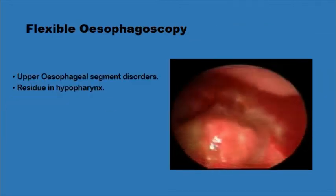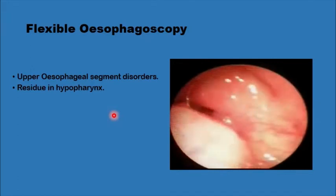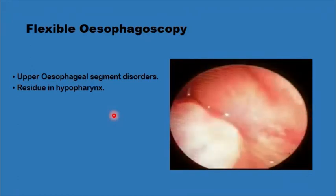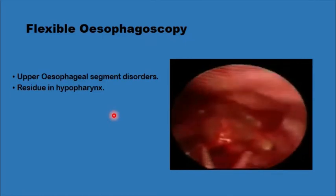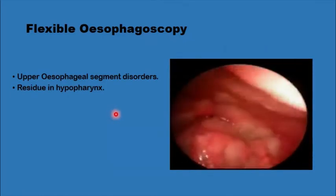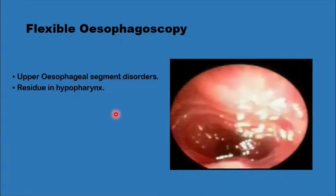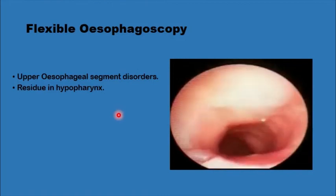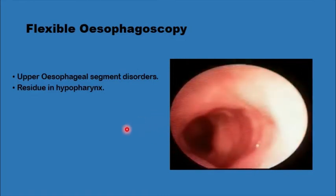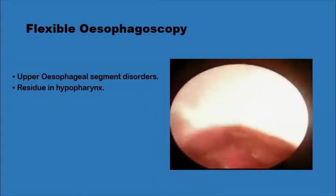Every patient also has a flexible oesophagoscopy to examine the lower part of the hypopharynx and the cricopharyngeus segment. Once the oesophagus is entered, any pathologies inside the oesophagus are noted — signs of reflux, other lesions, strictures, or stenosis.